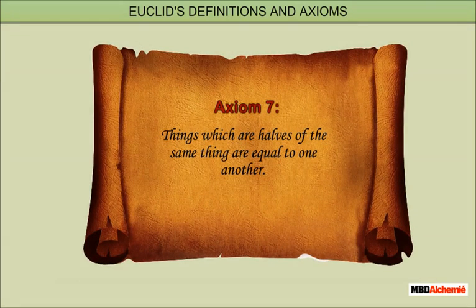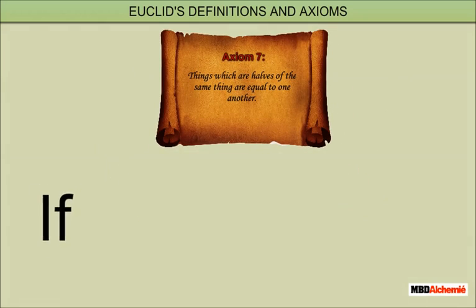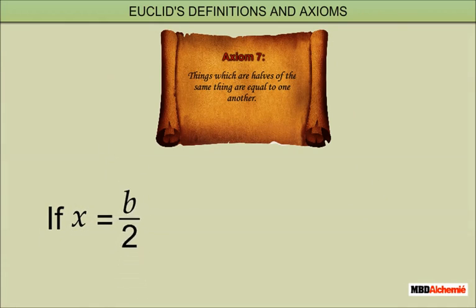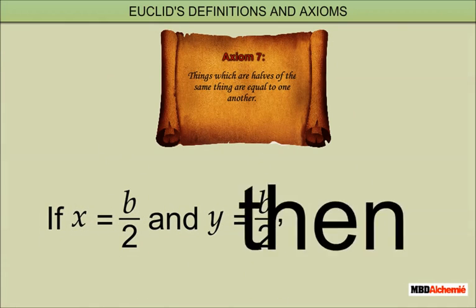Axiom 7: Things which are halves of the same thing are equal to one another. Example: if x is equal to B upon 2 and y is equal to B upon 2, then x is equal to y.